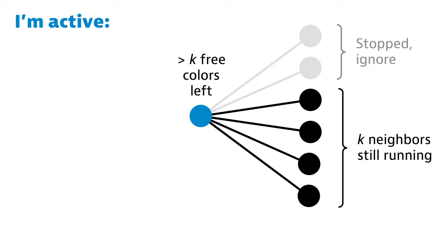Let's first consider what happens if I'm active. Now, the only reason why I might not stop is that I would pick a random free color that conflicts with one of my neighbors. We will first consider one specific neighbor, v.